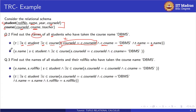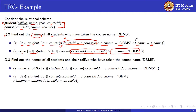The same query can also be written as: s dot name, vertical bar s belongs to student, and there exists c belonging to course such that s dot course id equals c dot course id — performing the natural join — and the required condition c dot c name equals DBMS. Here instead of writing the full expression, we already specified s dot name where s belongs to student and name comes from the student table. Both queries are correct.